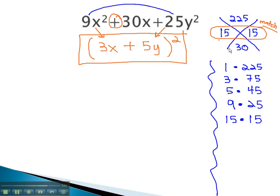When using the AC method, if we find a match, that means we have a perfect square.